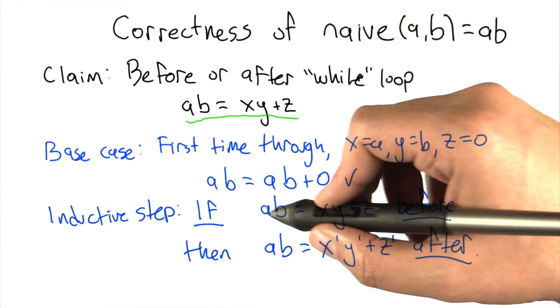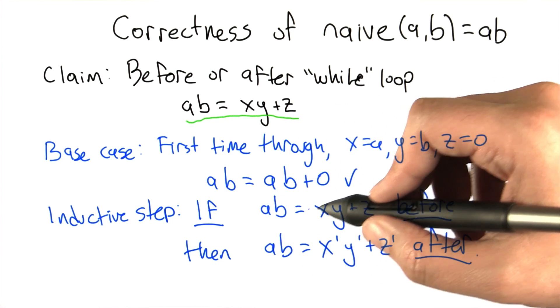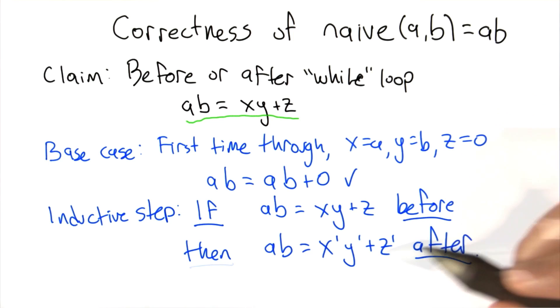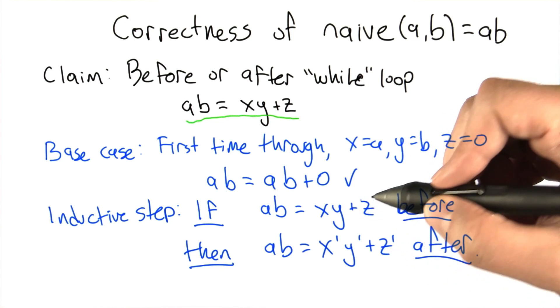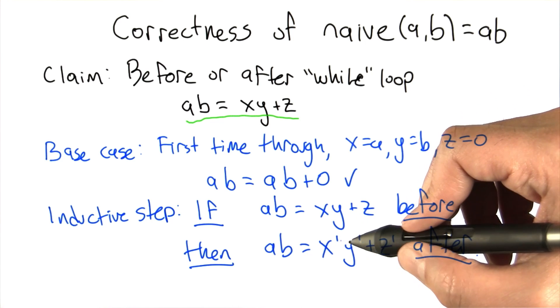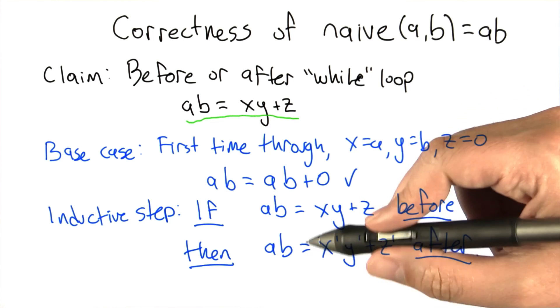beginning of the while loop, this condition holds that A times B is exactly equal to X times Y plus Z, then it's going to be the case that with the new values, so X, Y, and Z may change, the new values, X prime, Y prime, and Z prime, are going to satisfy this as well. So if it was true before, then it has to be true after.